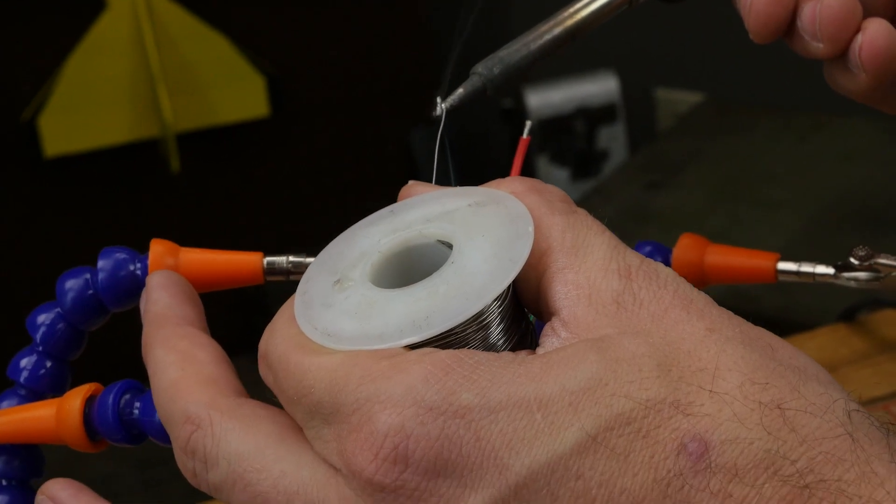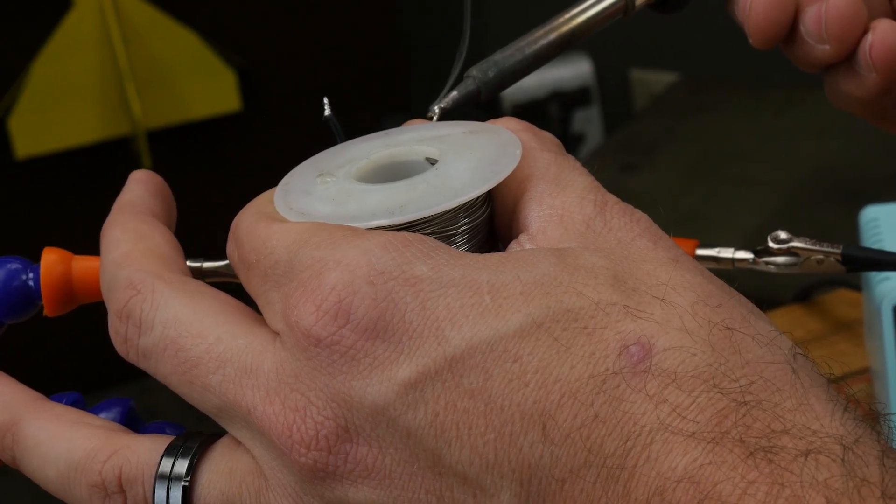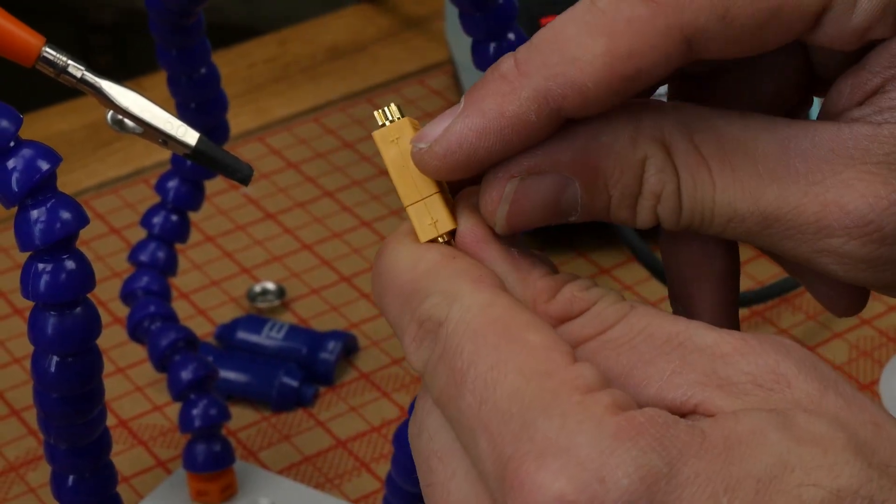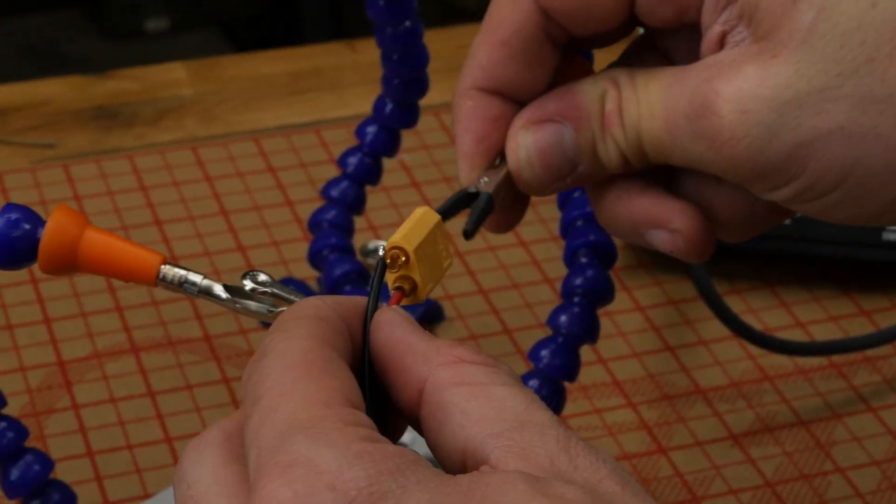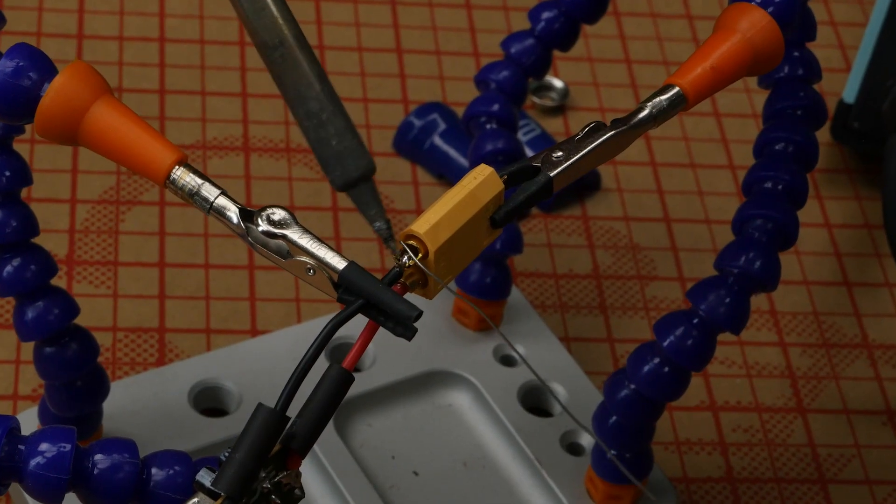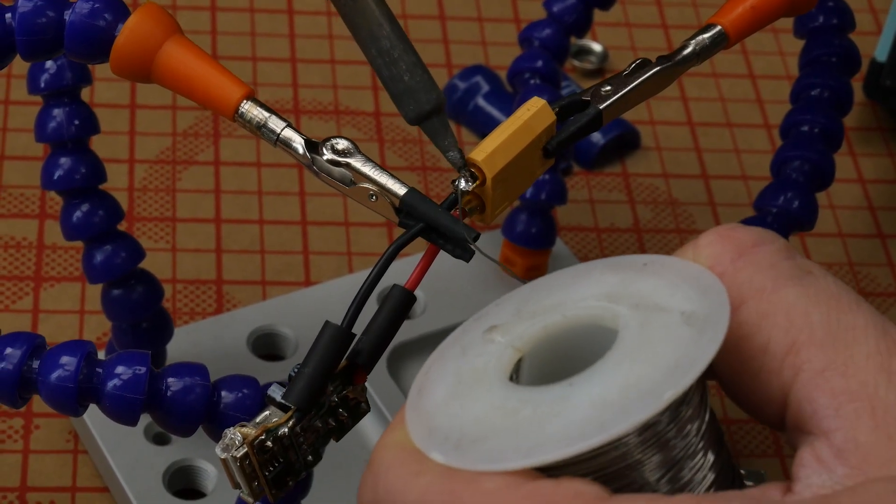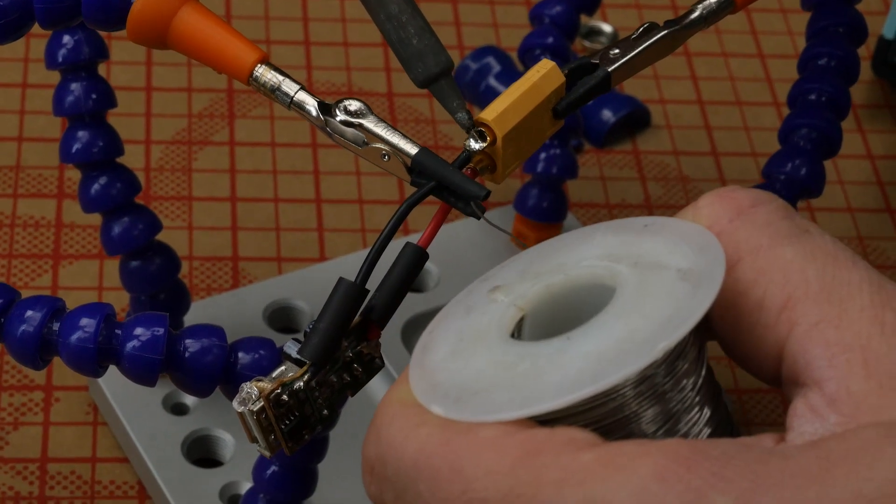This is a real good simple project to learn how to solder. Just make sure when you test it out, you test it out on something that you don't care about. On the XT60, you're going to see a little indicator, negative and positive. Attach your red wire to your positive terminal. And we're going to solder up our negative the exact same way we've soldered up our positive. Make sure that your solder joint is nice and shiny. A dull solder joint is a cold solder joint.